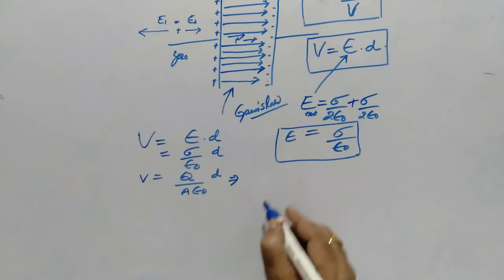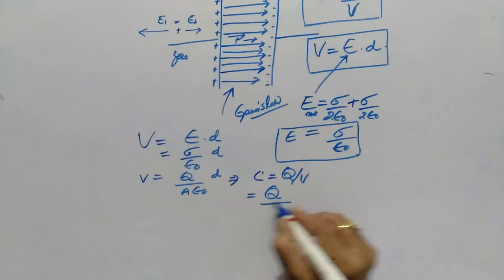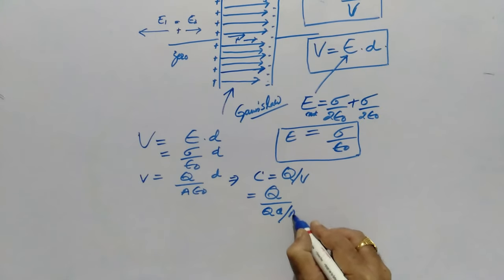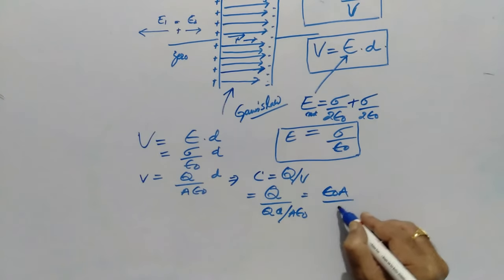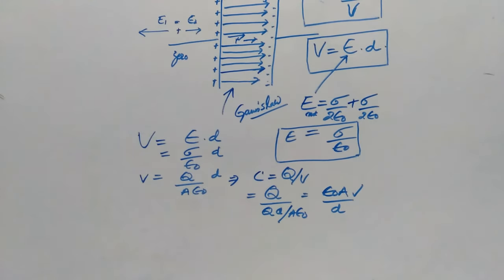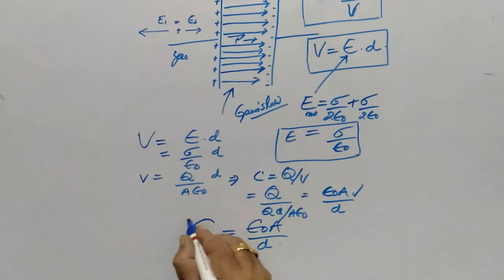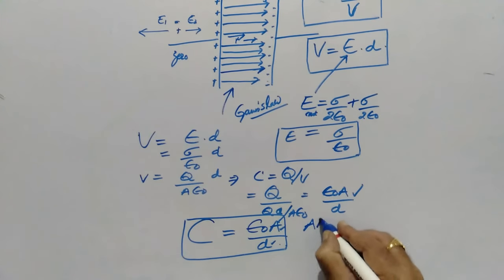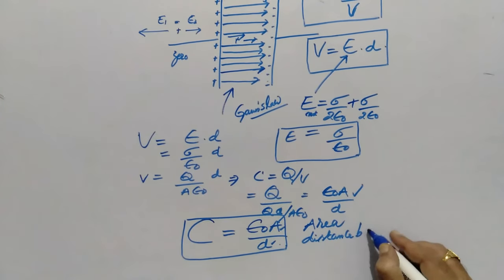Substituting into C = Q/V, with V = QD/(Aε₀), gives us the beautiful result: C = ε₀A/D. Therefore, the capacitance of the parallel plate capacitor depends only on geometrical quantities — the area A and the distance D between the plates.